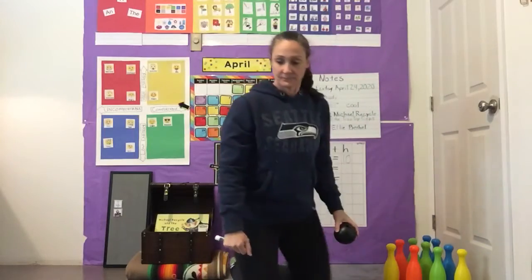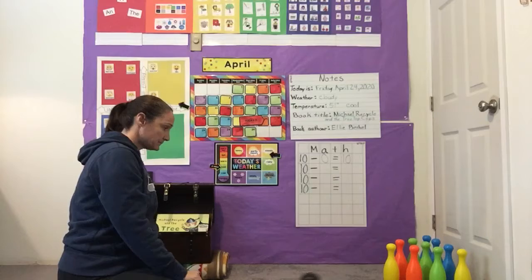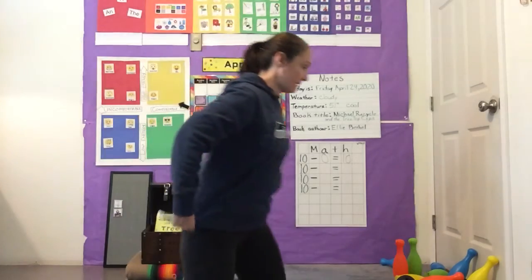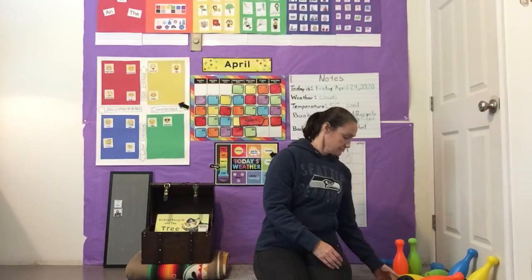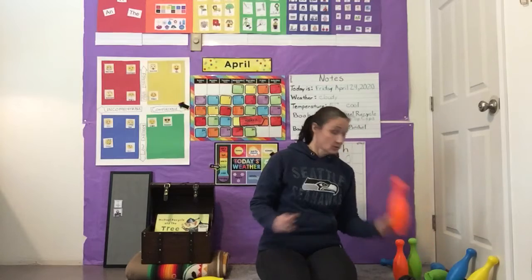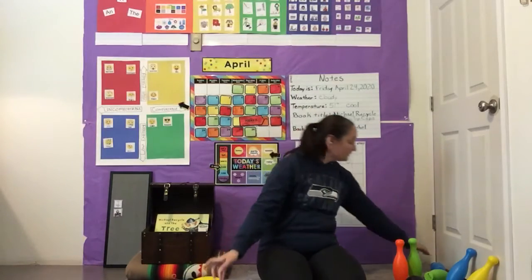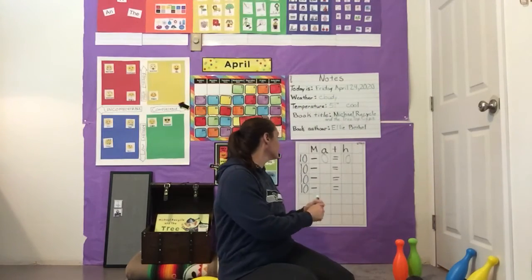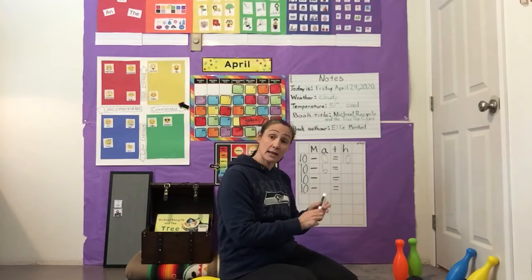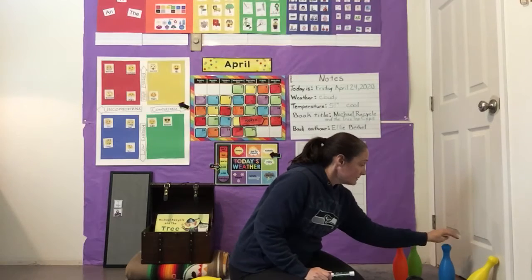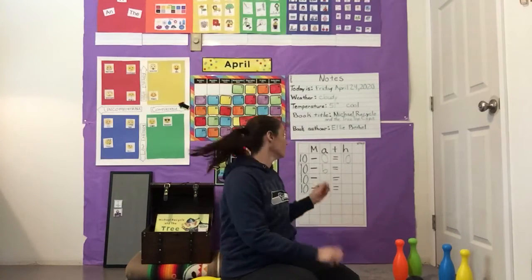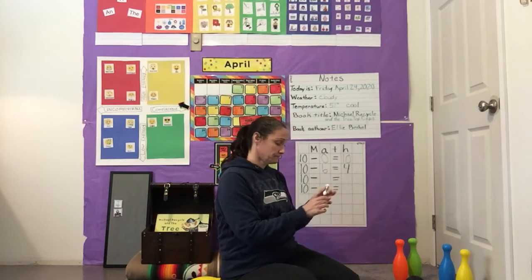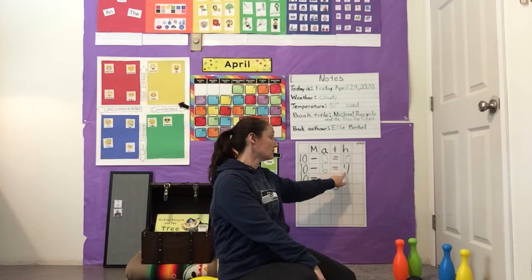We're going to roll again. Let's count how many were knocked down: 1, 2, 3, 4, 5, and 6. So we'll write our 6 right here. How many are left standing? 1, 2, 3, 4. So we'll write our 4 right here. Let's say that math problem together: 10 minus 6 equals 4. Great work, everyone.